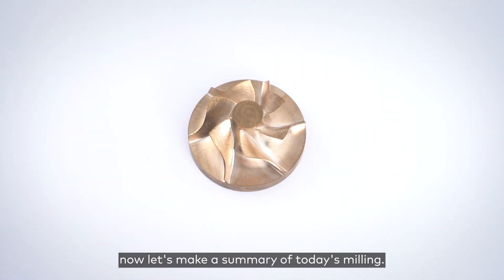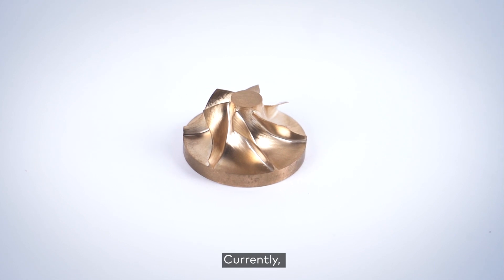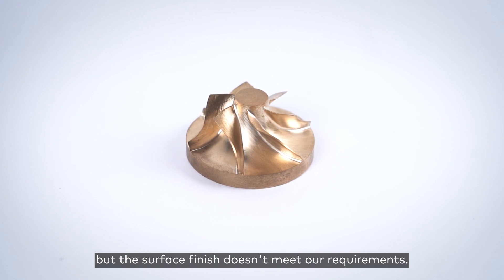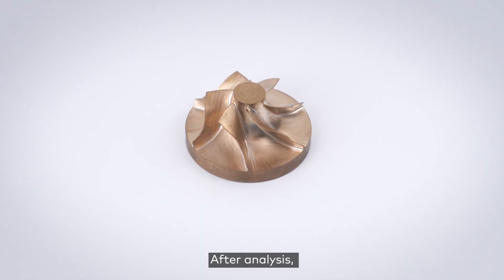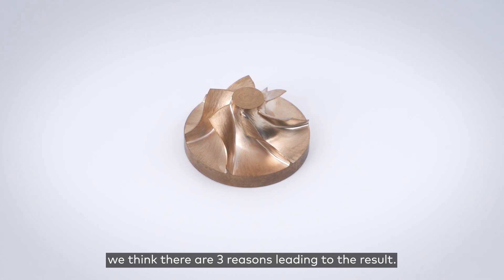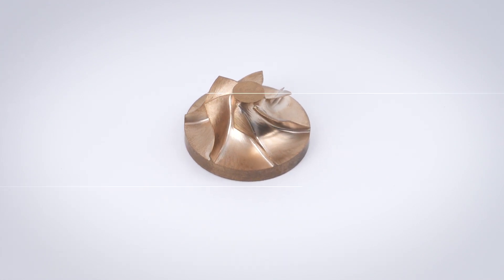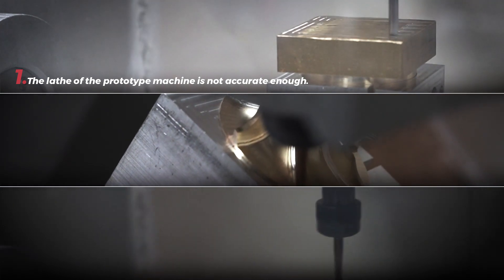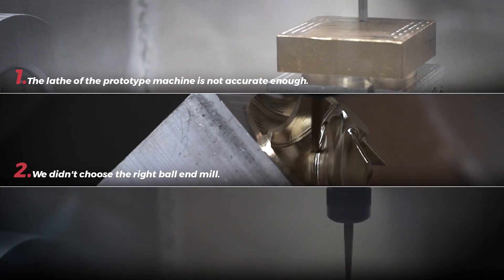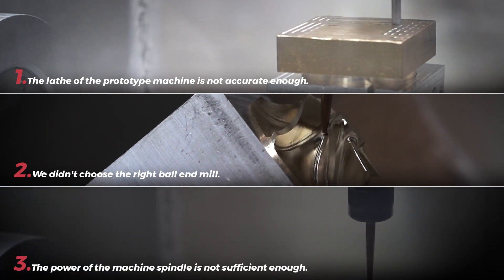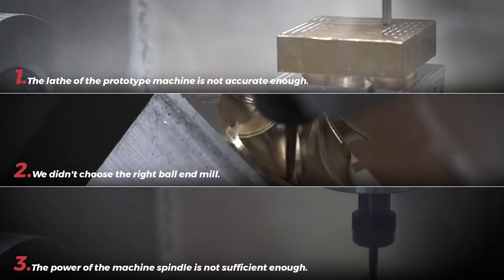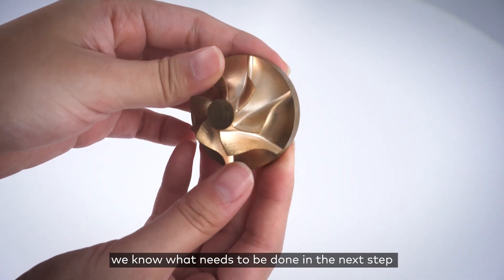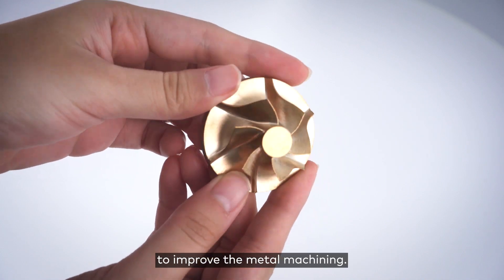Now let's make a summary of today's milling. Currently, the machine can afford to mill metal brass, but the surface finish does not meet our requirements. After analysis, we think there are three reasons: Number one, the rigidity of the prototype machine is not accurate enough. Number two, we didn't choose the right ball end mill. Number three, the power of the machine spindle is not sufficient enough.